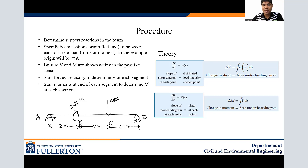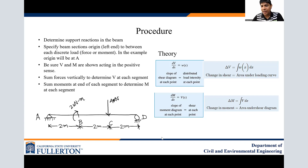We sum forces vertically to determine V in each segment — segments AB, BC, and CD. From statics theory, the slope of the shear diagram dV/dx equals the distributed load intensity at each point. Integrating, the change in shear equals the area under the loading curve. Similarly, the slope of the moment diagram equals the shear at each point, and integrating gives delta M — the change in moment equals the area under the shear diagram. These two relationships are the key theory we follow when solving the example problem step by step.